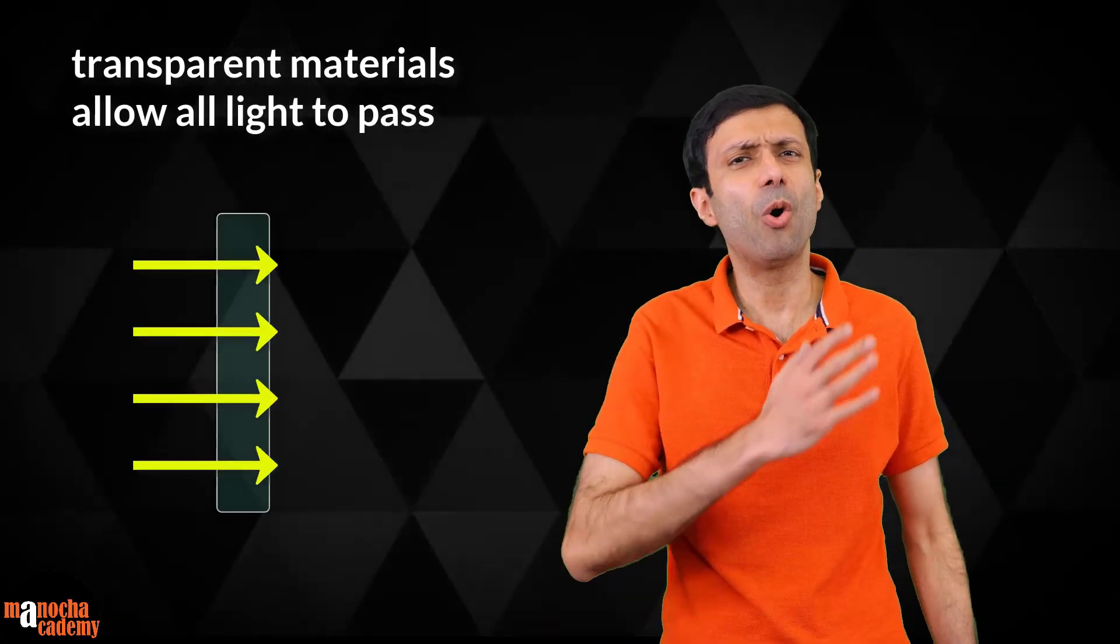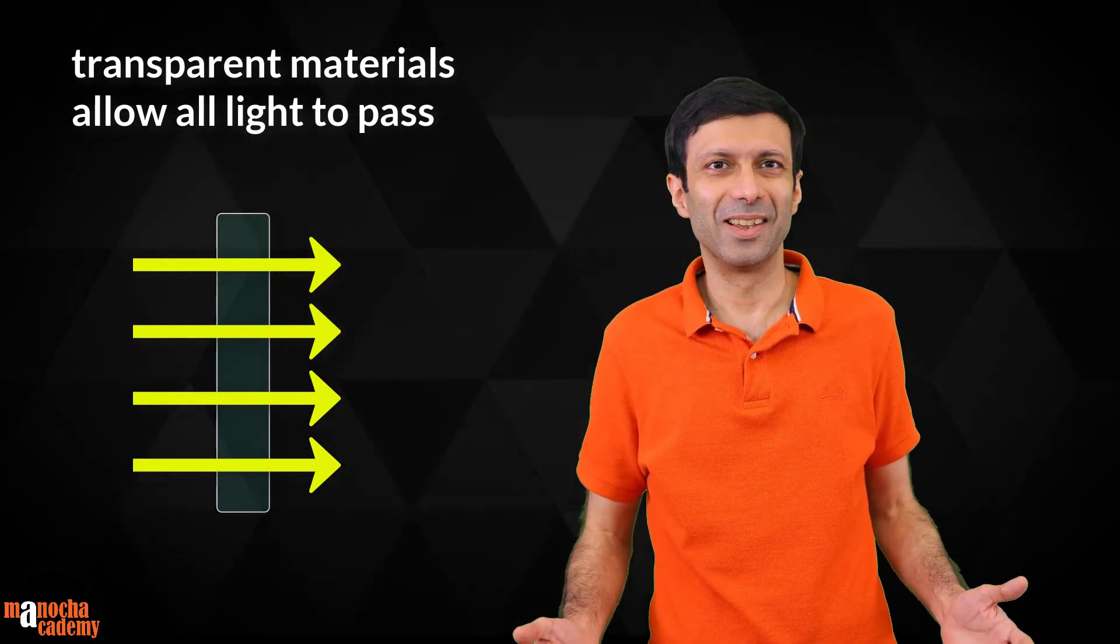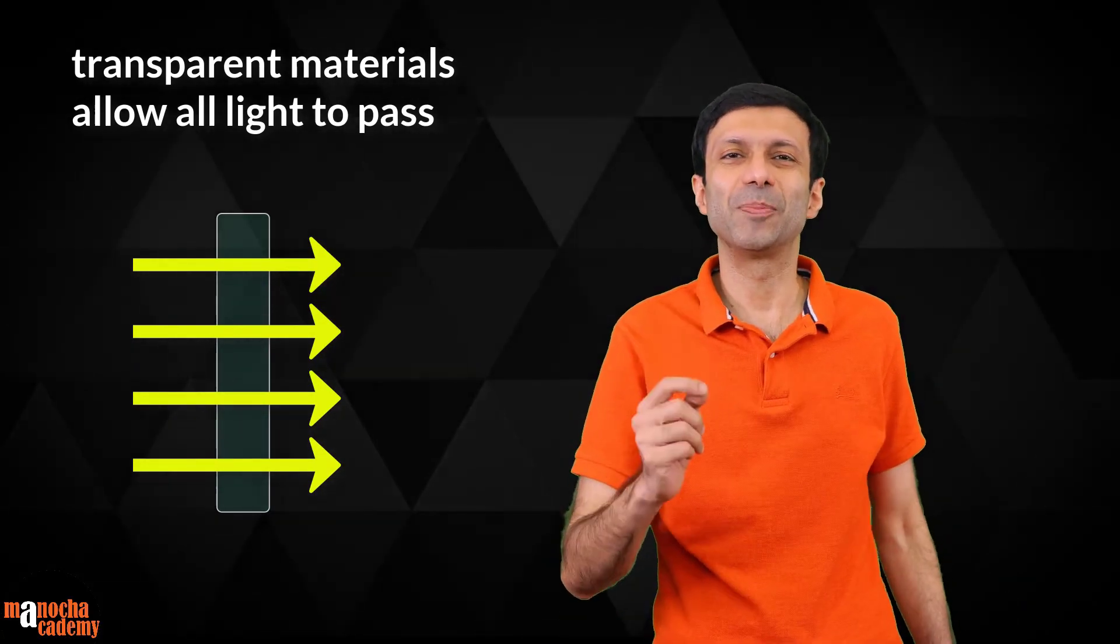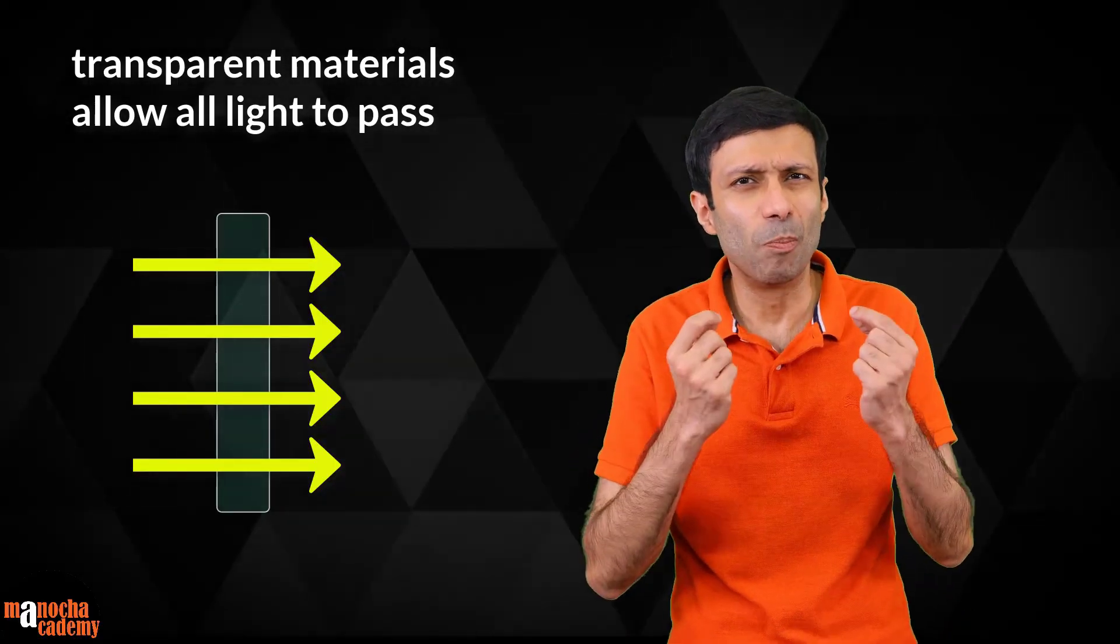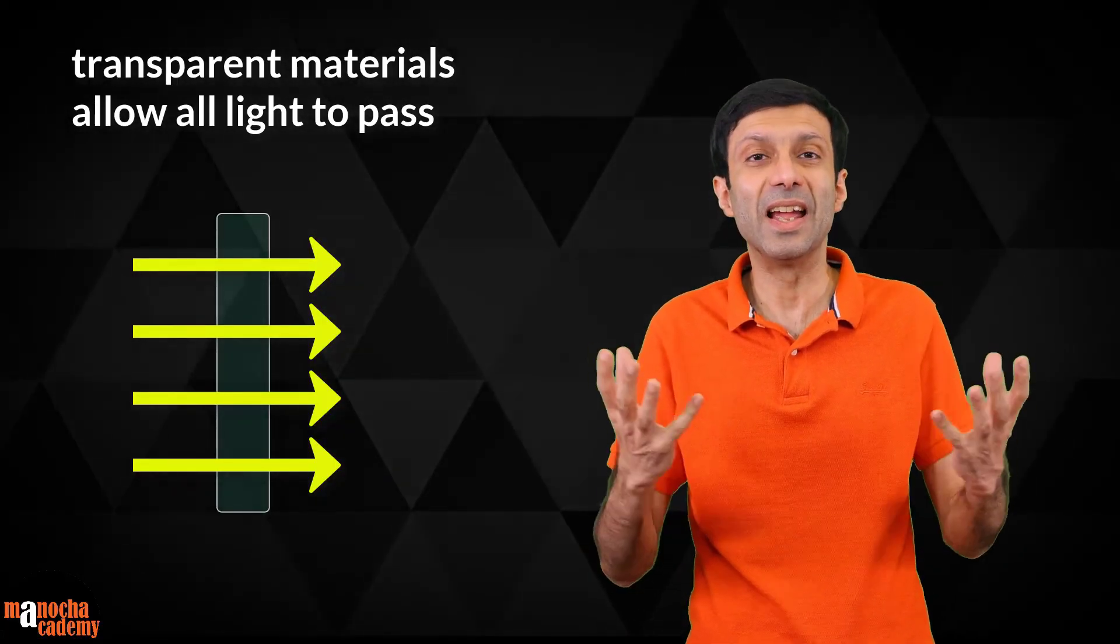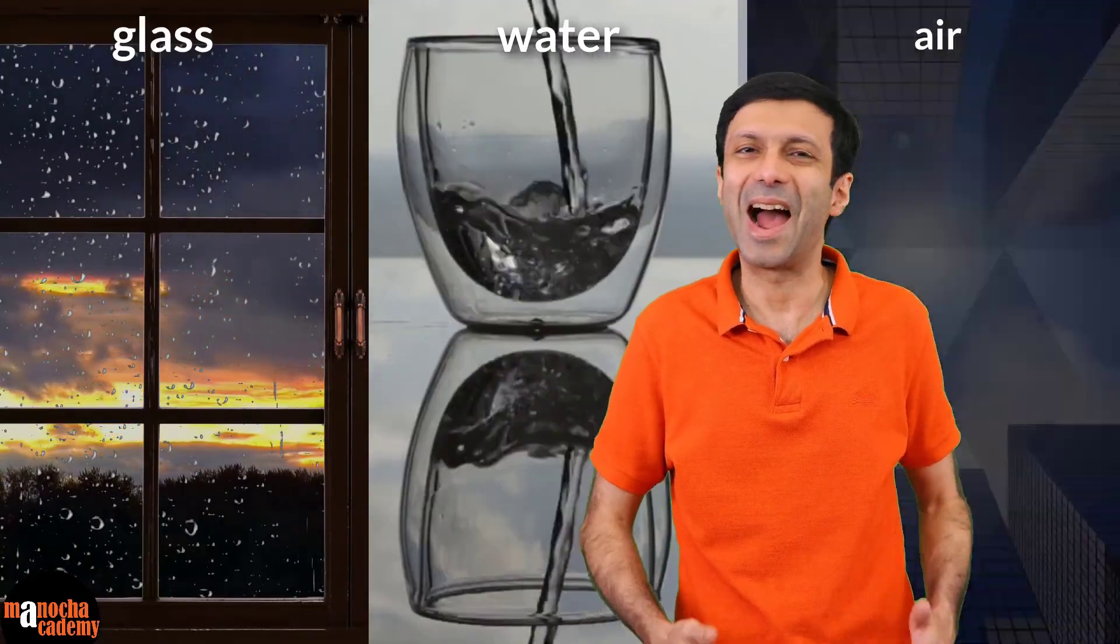Transparent materials allow all the light to pass through. That's the ideal case. Practically, transparent materials allow most of the light to pass through, and only a small percentage of the light is absorbed or reflected. Examples of transparent materials are glass, water, and air.